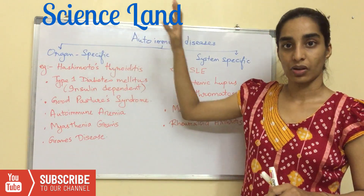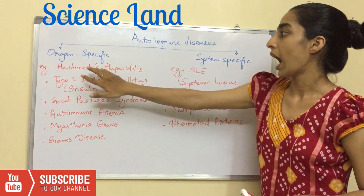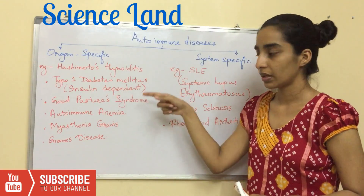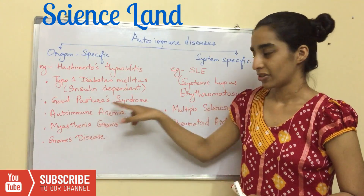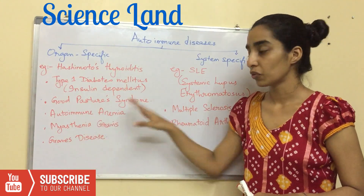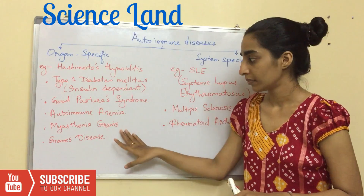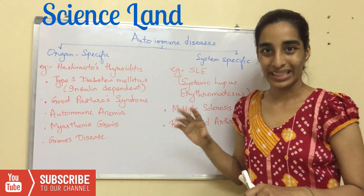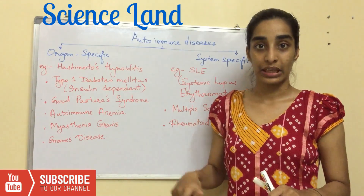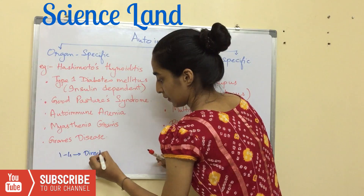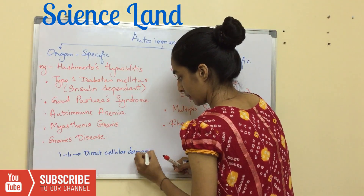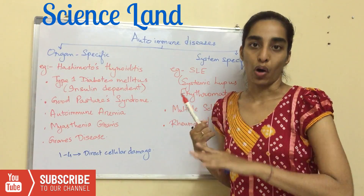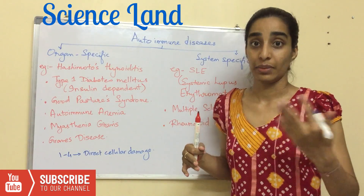The examples of organ-specific autoimmune diseases are Hashimoto's thyroiditis, type 1 diabetes mellitus (which is insulin-dependent diabetes), Goodpasture's syndrome, autoimmune anemia, myasthenia gravis, and Graves' disease. Out of these, the first four are mediated by direct cellular damage, and the 5th and 6th are mediated by either blocking or stimulating autoantibodies.